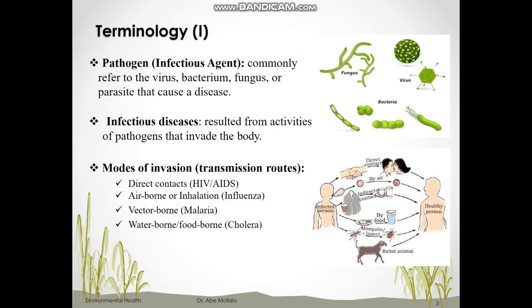What are infectious diseases? Infectious diseases are diseases that result from the activities of pathogens or germs that invade our body. They can invade our body in many ways. The first mode of transmission is direct transmission from an infected person to a non-infected person. An example of direct transmission is HIV-AIDS, where the pathogen can be transmitted through sexual relationship. Another way of invasion is through air, such as sneezing, coughing, breathing, and even laughing.